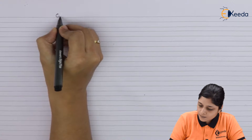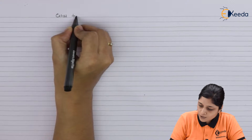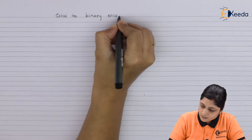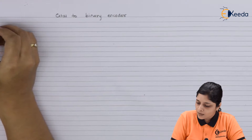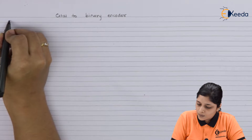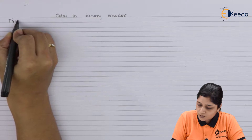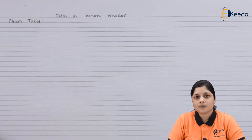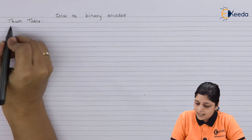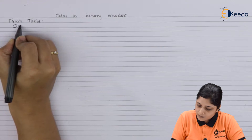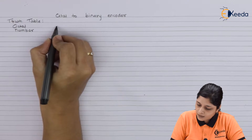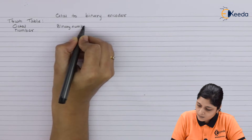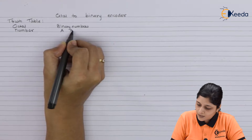Our heading is Octal to Binary Encoder. We will start with the truth table. The input side of the truth table has octal numbers, and at the output side we have binary numbers — that is A, B, and C.